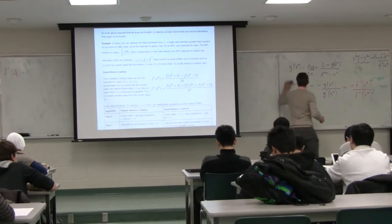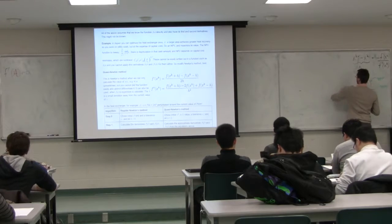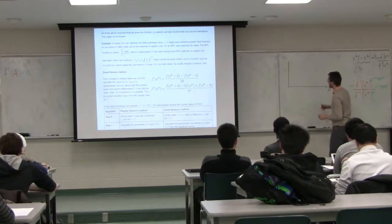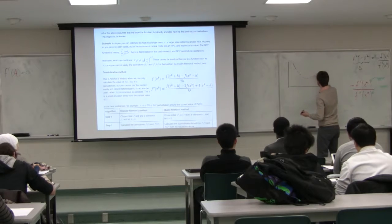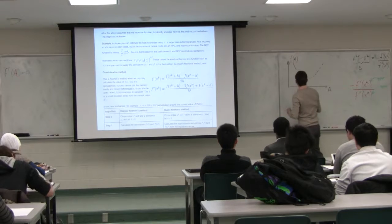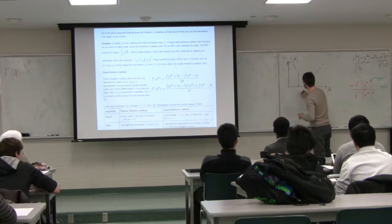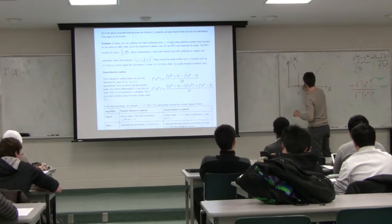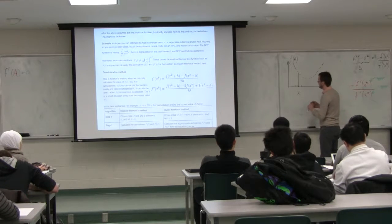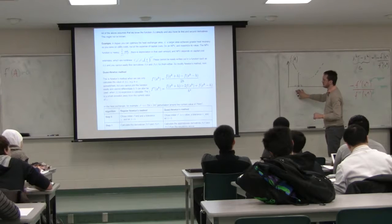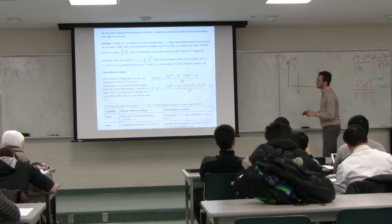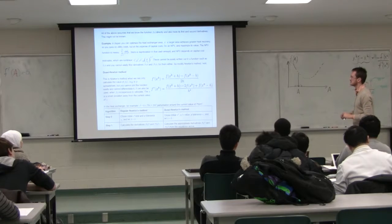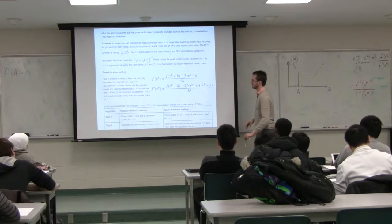Geometrically: we've got this heat exchanger area we're searching for, there's this unknown function, and at our current location we make a small perturbation down and a small perturbation up. We use those three function evaluations — f at the current area, f plus a small perturbation, and f minus a small perturbation. Only three Aspen simulations required, and you're back to regular Newton's method.